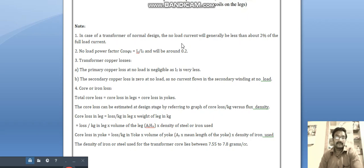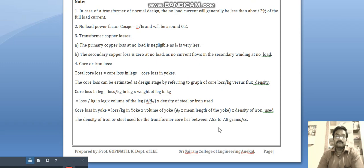Core loss in yoke: loss per kg in yoke multiplied with volume of yoke, Ay multiplied with mean length of the yoke and density of iron used. The density of iron or steel used typically lies between 7.5 to 7.8 grams per cc. Thank you.